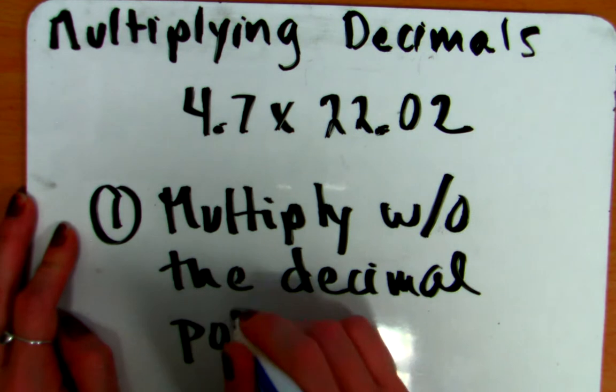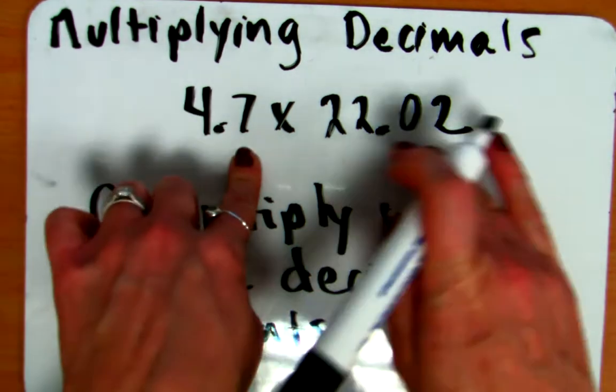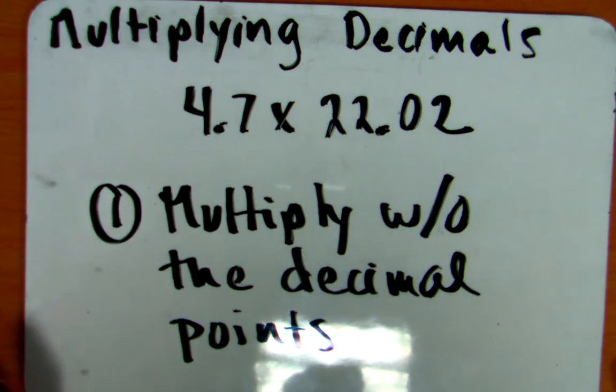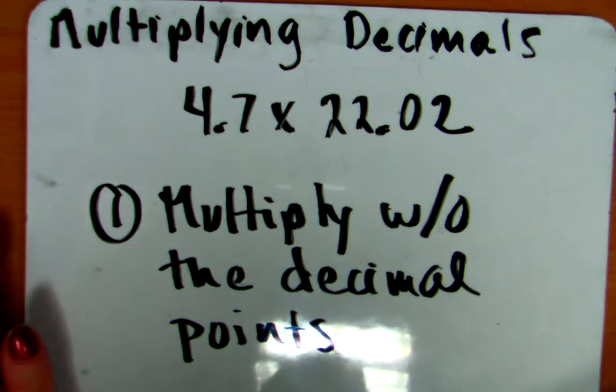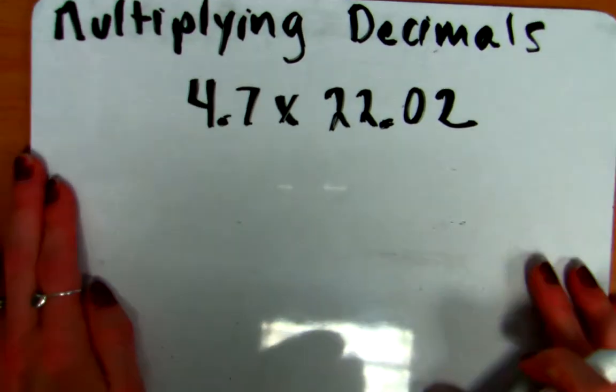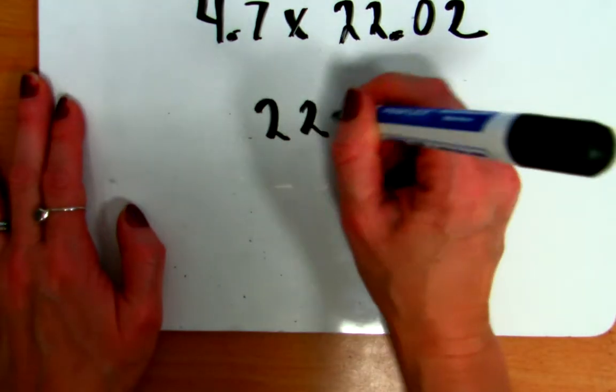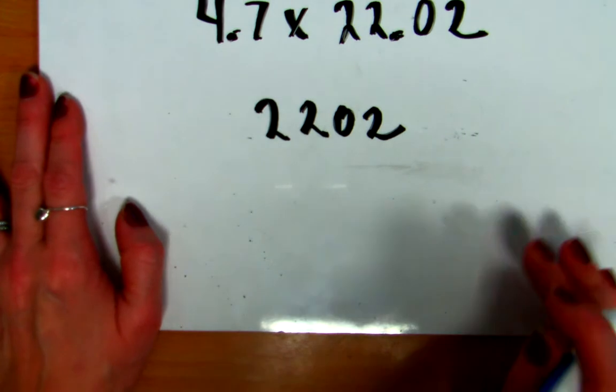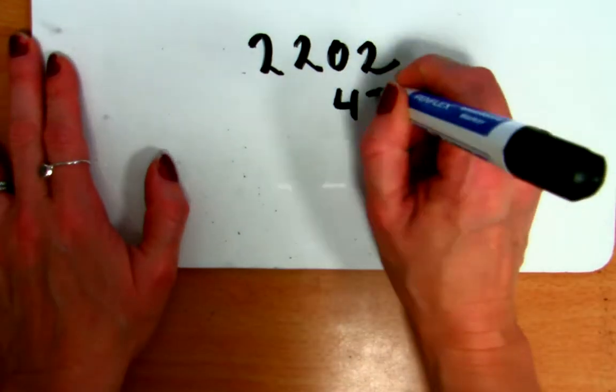Because, since we're multiplying, these digits need to get multiplied by these digits. 4 and 7 need to get multiplied by 2, 2, 0, and 2. And it's much easier to do that without those decimal points in there. We'll talk in a little bit why we don't need to line the decimal points up. So, let's look at how we multiply 4.7 times 22.02. In general, principle says that you put your bigger number on top. Now, you don't have to do this, but it generally helps with organization a little bit.